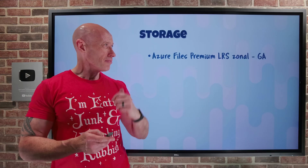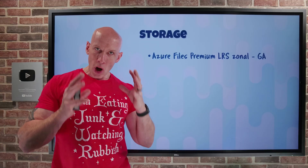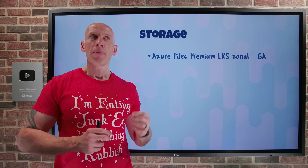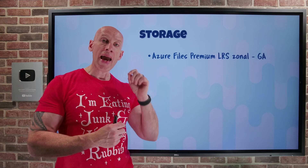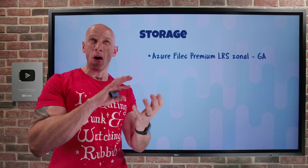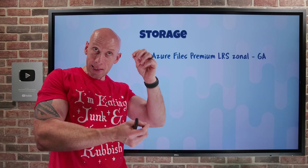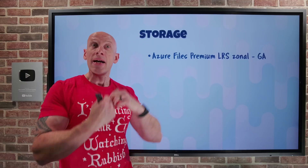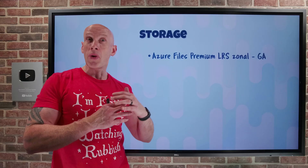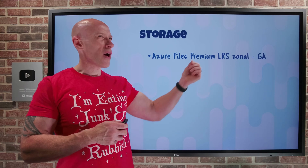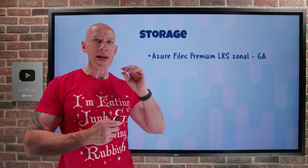On the storage side, Azure Files Premium LRS — locally redundant storage — now has a zonal option in GA. With LRS, you get three copies of your data within a certain cluster. Now you can specify which availability zone you want that LRS deployment in. Maybe you need closer alignment to a certain set of compute, want to reduce latency, or are doing your own resiliency and replication — with instances in AZ1, a separate instance in AZ2, etc. If you just want zonal redundancy, you'd use ZRS, which splits the three copies over the three AZs. This is for when you want the three copies in one specific AZ.